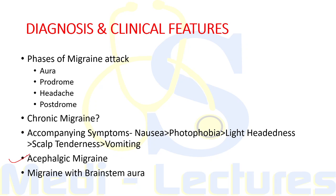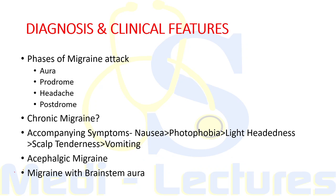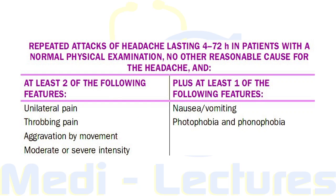Acephalgic migraine is typical aura without any headache — the aura phase is present but the headache phase is absent. The patient complains of recurrent neurological symptoms, often with nausea or vomiting but little or no headache. Migraine with brainstem aura has predominantly brainstem symptoms like slurred speech, double vision, and decreased consciousness, and was earlier known as basilar migraine.